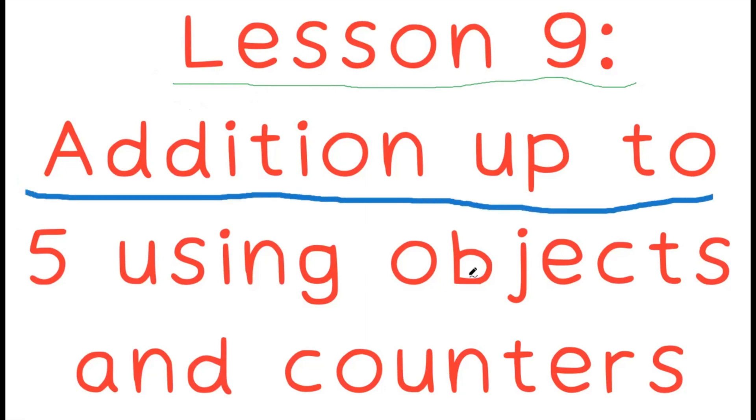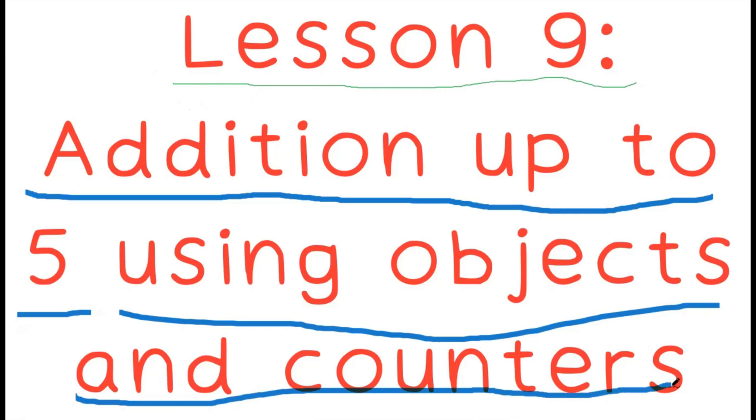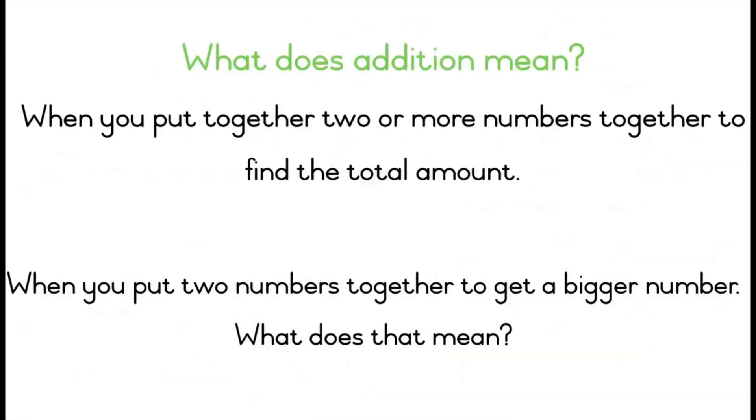Addition up to 5 using objects and counters. What does this mean? When you put together two or more numbers to find the total amount. When you put two numbers together to get a bigger number. What exactly does that mean?